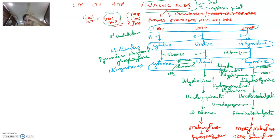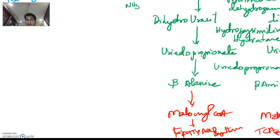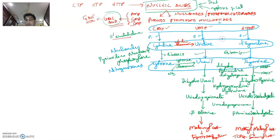So to summarize: cytosine forms uracil — this can also occur at the nucleoside level where cytidine forms uridine in presence of cytidine deaminase. We have nucleotides CMP, UMP, and dTMP which lose a phosphate in presence of 5' nucleotidase to form the respective nucleosides cytidine, uridine, and thymidine. After removal of their sugars, they become their respective nitrogenous bases: cytosine, uracil, and thymine.